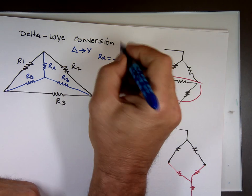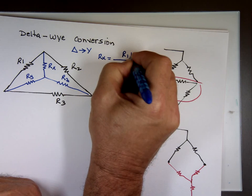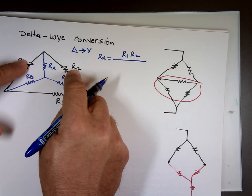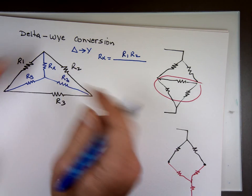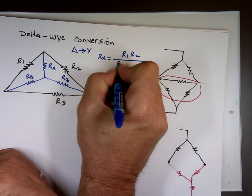R sub X is squeezed between this and that. So on the top is going to be R1 times R sub 2. You multiply the ones around it. And the bottom is always going to be the same. It's the sum of all three of them.